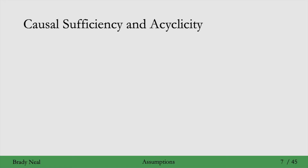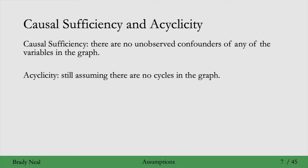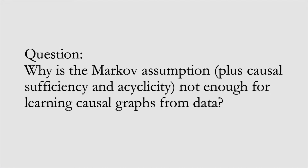The other two assumptions are more familiar. Causal sufficiency means there are no unobserved confounders of any variables in the graph. Acyclicity is what we've been doing throughout this course — the graphs are acyclic. So listing all assumptions together: the Markov assumption, the faithfulness assumption, causal sufficiency, and acyclicity. That brings us to the question: why is the Markov assumption plus causal sufficiency and acyclicity not enough for learning causal graphs from data?